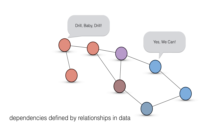This leads to a whole area of research called relational learning, where you use the fact that a lot of the information we collect from the world and store in databases is relational in nature — it describes relationships between entities. If we use these relationships to define the dependencies between variables, we can automatically build the structure of a Markov network or a Bayes net based on data.